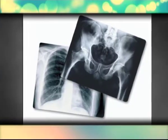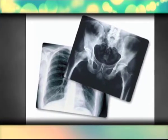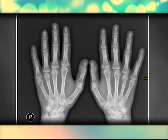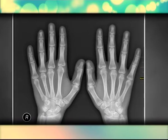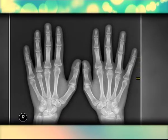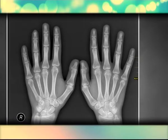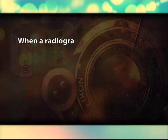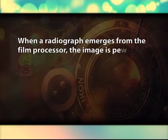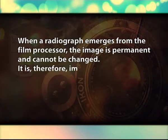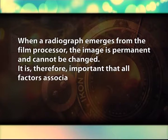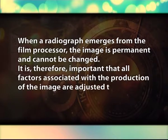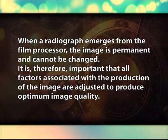Image Display: Most filmed medical images are recorded as transparencies; in this form, they can be easily viewed by trans-illumination on a view box. The overall appearance and quality of a radiographic image depends on a combination of factors, including the characteristics of the particular film used, the way in which it was exposed, and the processing conditions. When a radiograph emerges from the film processor, the image is permanent and cannot be changed. It is therefore important that all factors associated with the production of the image are adjusted to produce optimum image quality.